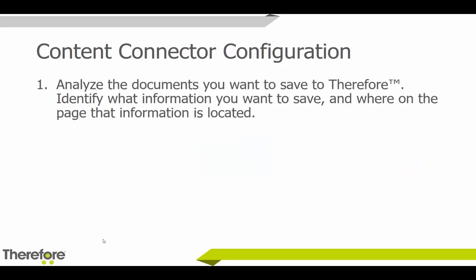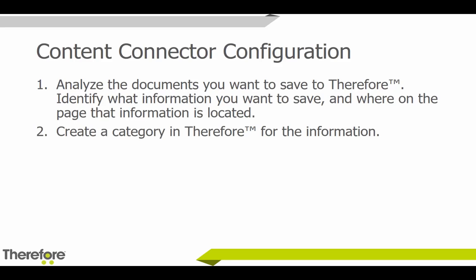Although each situation is slightly different, the configuration steps can generally be summarized in five steps. The first step is to analyze the documents you want to save to Therefore — identify what information you want to save and where on the page that information is located. Then you create a category in Therefore for that information. Use best practice: if you're saving a date, use a date field; for a money amount, use a numeric field; for text, use a text field. This is very important because once that information is in Therefore, you'll probably want to use a workflow to further process it.